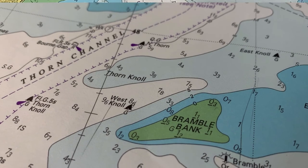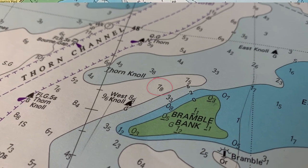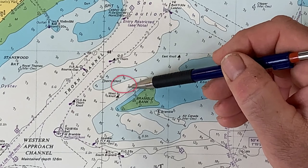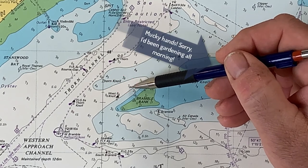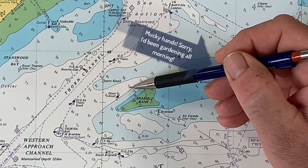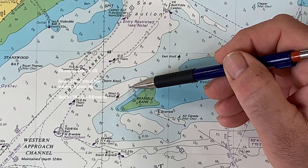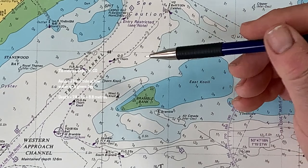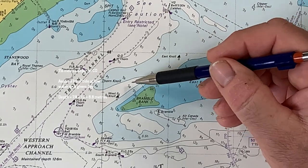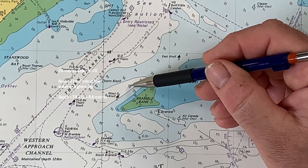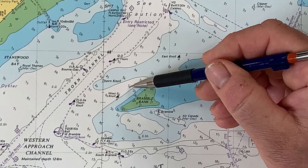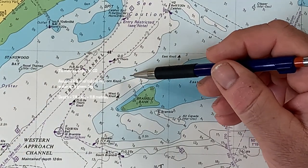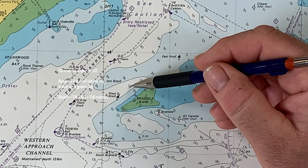You can see lots of soundings on the chart. For example, 7.8 means 7.8 metres — that is 7.8 metres of water at chart datum. To that we add any additional water provided by the tide. So at low water we might have another metre, giving 8.8 metres. At high water we might have 4 metres of tide, so that gets us to 11.8 metres.